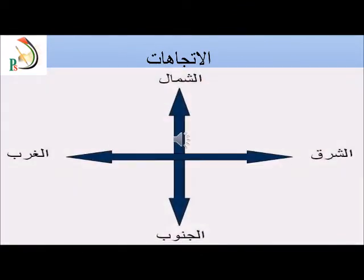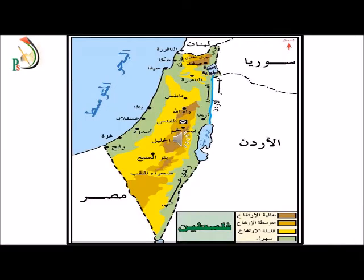قبل أن نتعرف على شكل فلسطين، هيا بنا أعزائي الطلاب نتعرف على الاتجاهات الأربع الرئيسية: الشرق، الغرب، الشمال، الجنوب. شاهد معي خريطة وطني فلسطين وحاول الإجابة عن هذه الأسئلة: هل تمتد فلسطين بشكل طولي أم عرضي؟ ومن أين تتسع؟ ومن أي اتجاه تضيق؟